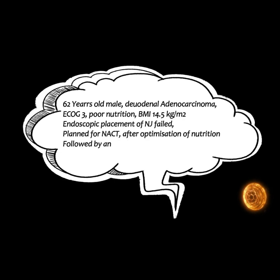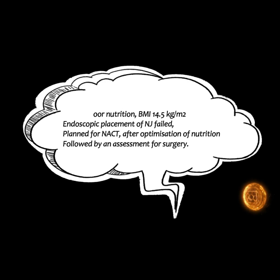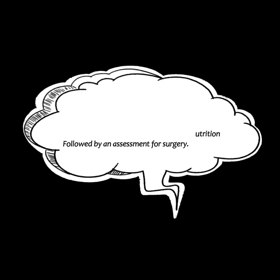The indexed case is a 62-year-old male, a case of duodenal adenocarcinoma with poor performance status of ECOG-3 and poor nutritional level, BMI 14.5 kg per meter square. Patient was resectable but not operable. Endoscopic placement or NJ tube failed. Patient was planned for neoadjuvant chemotherapy after optimization of nutrition, followed by assessment for surgery.